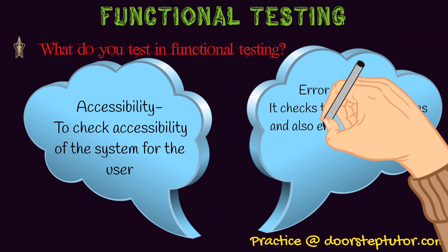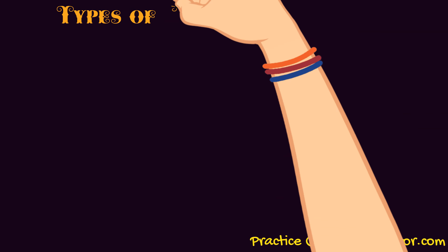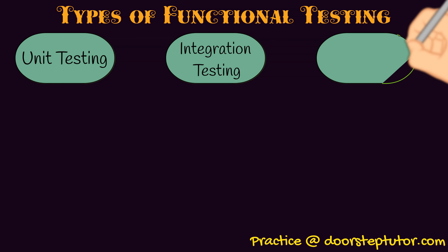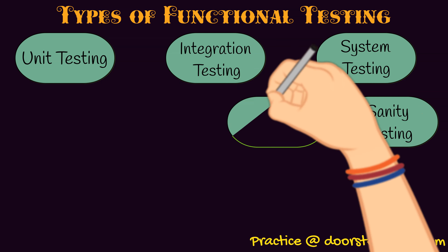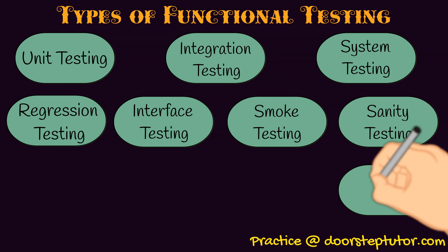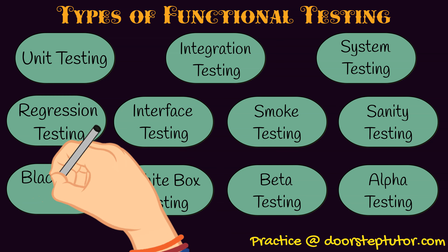The last aspect is error conditions — the software developed by the organization must ensure that if there are any errors, an error message must be displayed; otherwise the system should work according to need. The types of functional testing include: unit testing, integration testing, system testing, sanity testing, smoke testing, interface testing, regression testing, alpha and beta testing, and finally white box and black box testing.